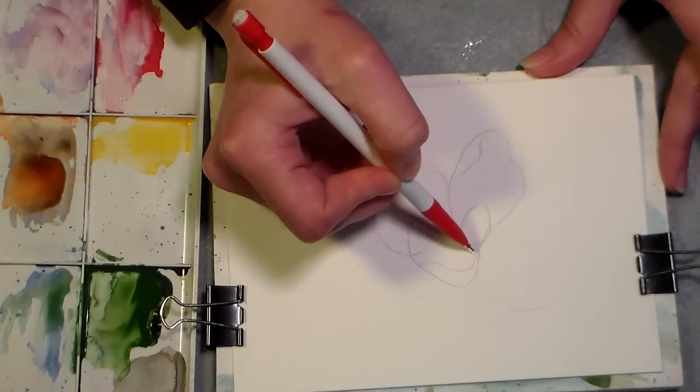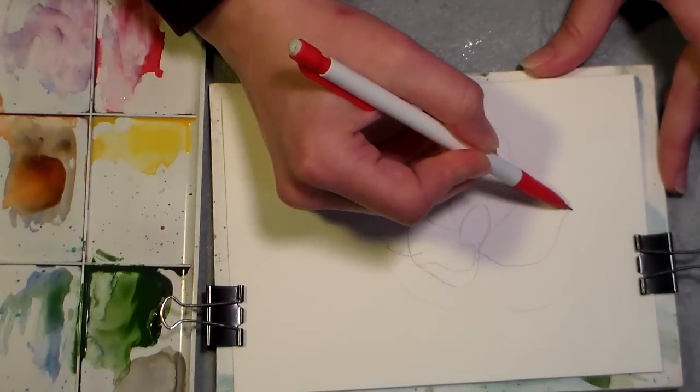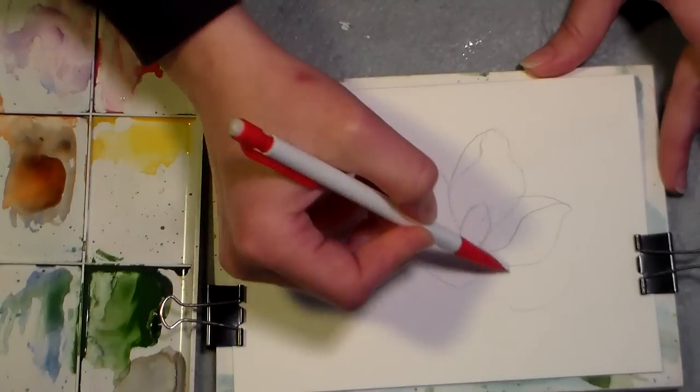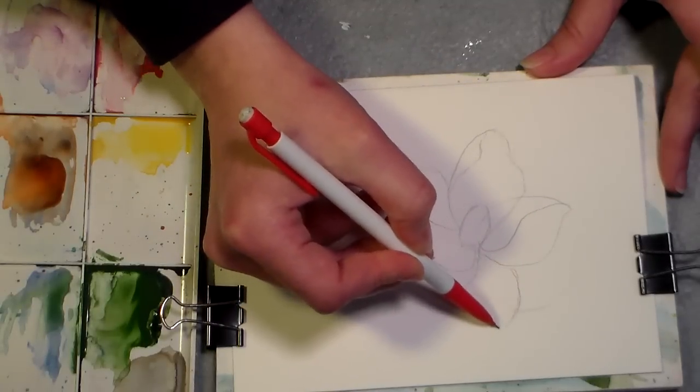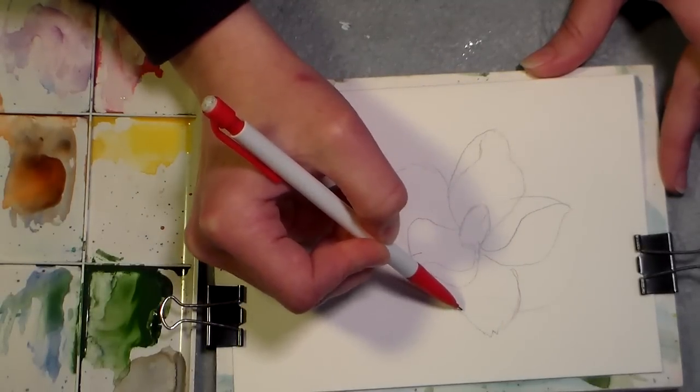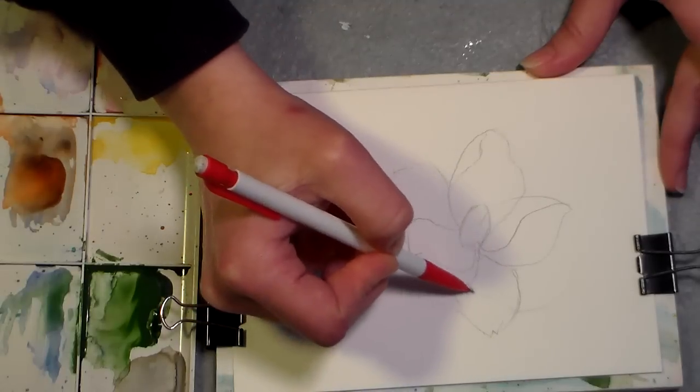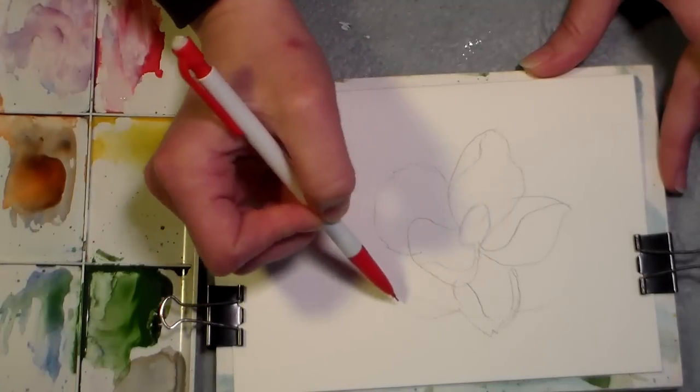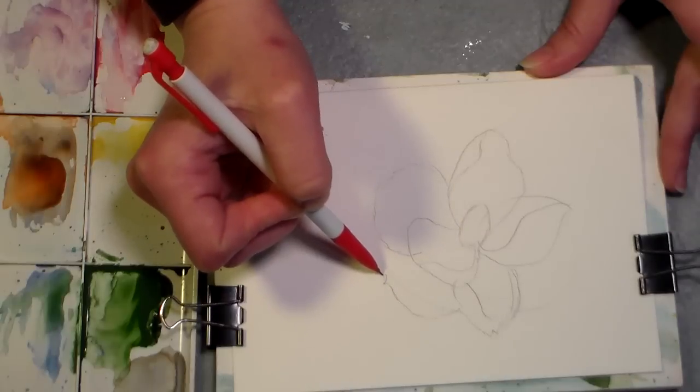Magnolia petals have such a lovely shape to them. I'm going to put in another one over here that's very similar to that. You're kind of seeing the side of it, one in the front, and I never draw the flower the same way twice, so they'll always be a little bit different. This isn't going to be exactly like the one I just showed you. It'll be a little bit different, but that's all right.